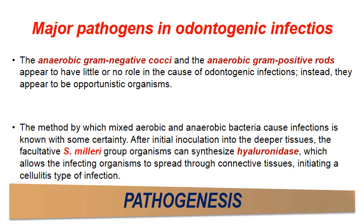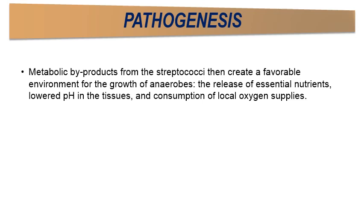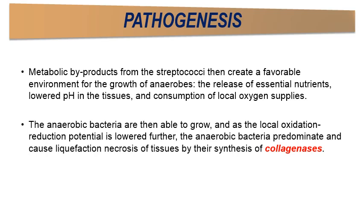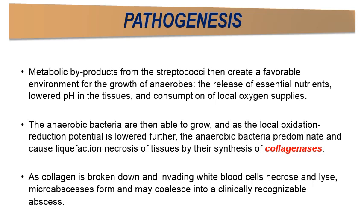After initial inoculation into deeper tissues, the facultative Streptococcus milleri group — able to survive in the absence of oxygen — can synthesize hyaluronidase enzyme, which destroys the ground substance of connective tissue, allowing infective microorganisms to spread further into the tissues and initiate cellulitis. Their metabolic byproducts create a favorable environment for anaerobic growth by releasing essential nutrients, lowering tissue pH, and consuming local oxygen. Anaerobic bacteria then synthesize collagenase, leading to liquefaction necrosis. Dead cells from white blood cells and bacteria lyse to form micro-abscesses, which coalesce into a clinically recognizable abscess.